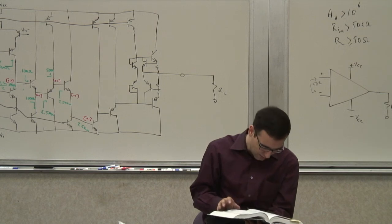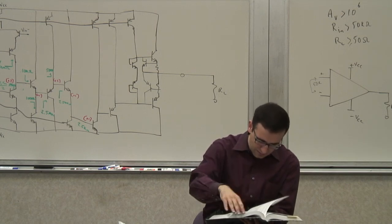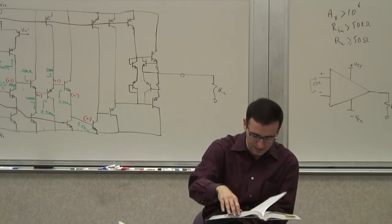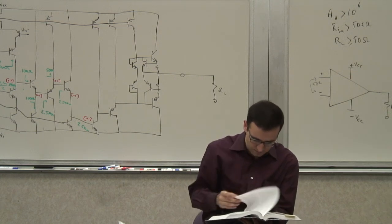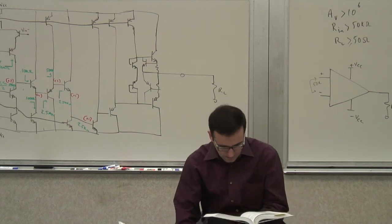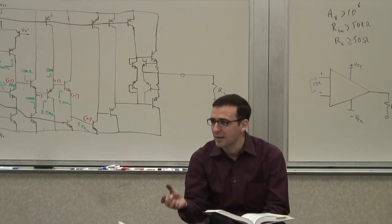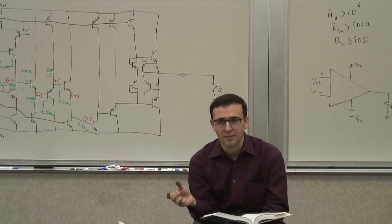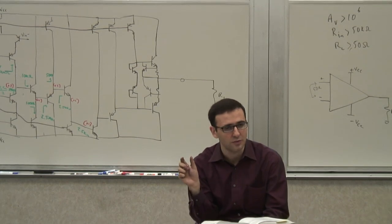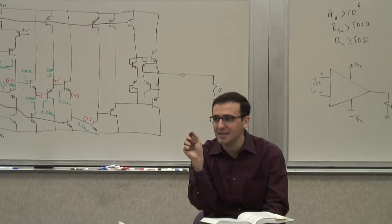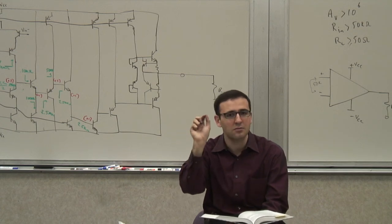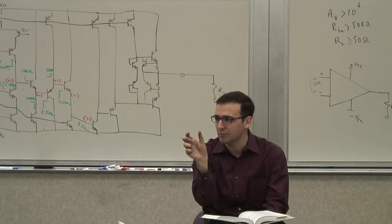Now let's look at some other variations of op-amps. Let's go to page 475. One of the problems in op-amps is the input offset. Because of this very large gain, if you have a little offset and mismatch in the input transistors — if your transistors are not matched — even the slightest amount, let's say 100 microvolts of mismatch between the input transistors, and if you have a gain of a million, that translates to 100 volts at the output.